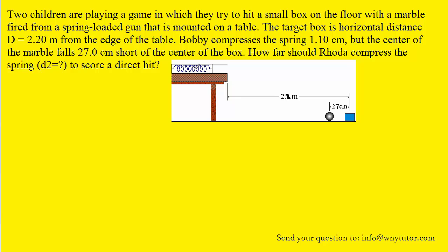Then the ball is released and it goes flying off the edge of the table, and when it does so, it has kinetic energy. Those two energies should be set equal to each other, so let's go ahead and do that. On the left side is the spring potential energy, and on the right side is the kinetic energy of the marble.